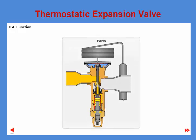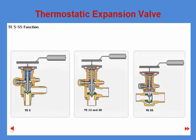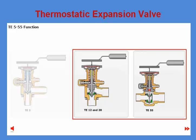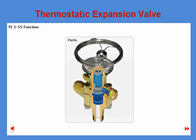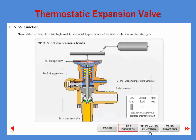The TGE thermostatic expansion valve is designed as a hermetic valve with copper connectors — solder or SAE flare. The TE5255 thermostatic expansion valve is designed as a three-component take-apart valve, facilitating flexible installation and easy service. For TE5, both SAE flare and solder connections are available; for TE12, TE20, and TE55, only solder versions are available. The valve type was originally introduced more than 40 years ago but has been updated several times, most comprehensively in 2011. In this slide, you can explore the way the TE5255 valve works — click on the function button and move the slider between low and high load to see what happens when the evaporator load changes.